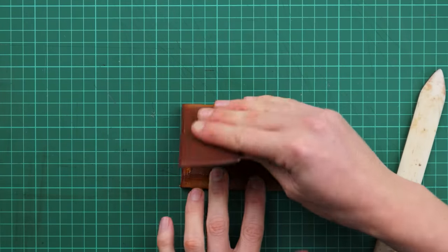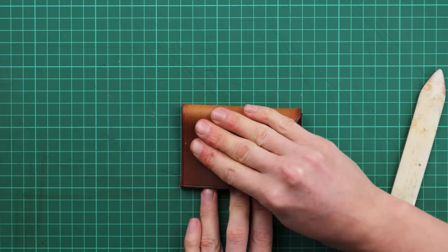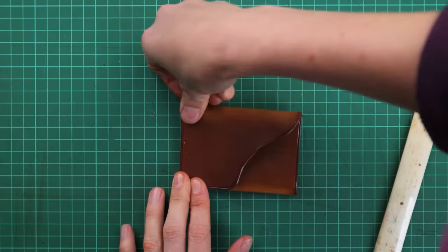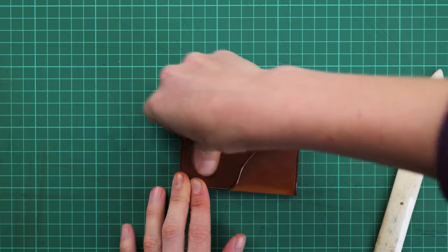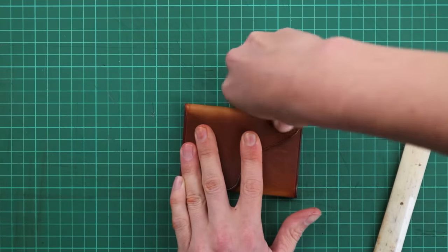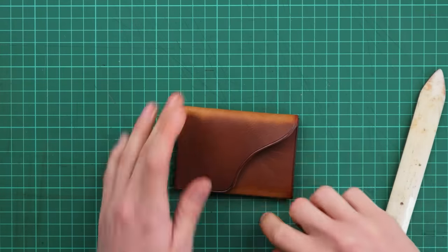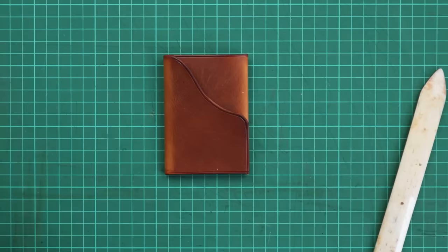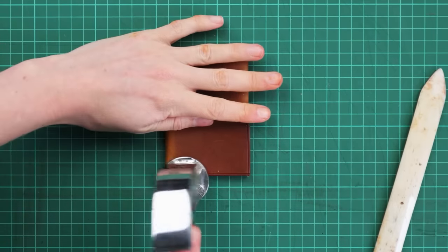And now fold your front section over so the bottom edges are all nicely aligned. And then once again you can use a hammer just to tap those edges flat.